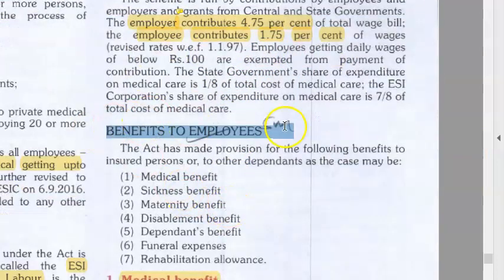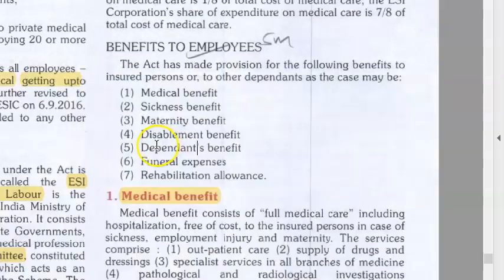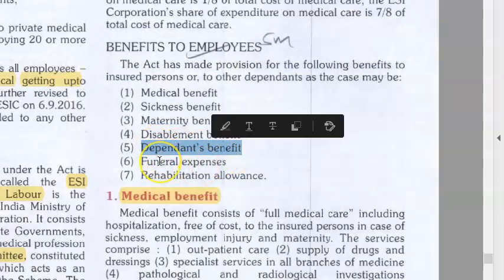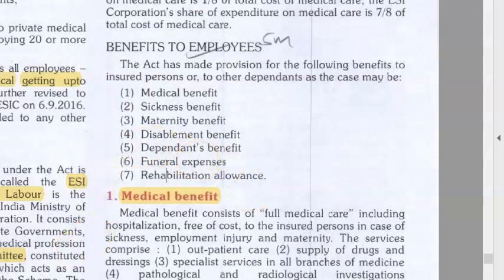What are the benefits to employees? Medical benefit, sickness benefit, maternity benefit, disablement benefit, dependent benefit, funeral expenses benefit, and rehabilitation benefit. For sickness, they get leaves. For maternity, pregnancy is covered. For disablement, injury is covered. If the insured person dies, dependents get benefit. Funeral expenses are also provided, along with rehabilitation allowance.